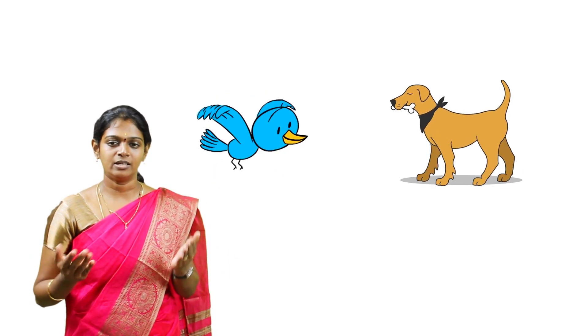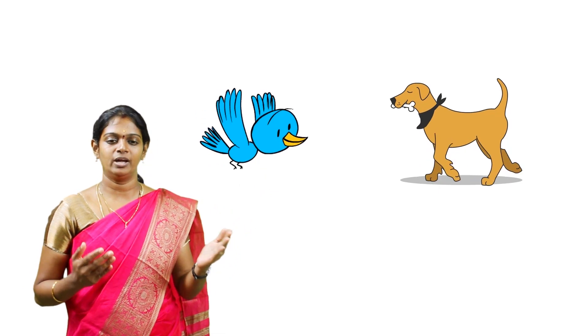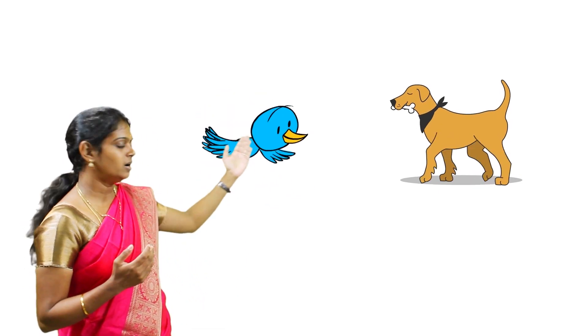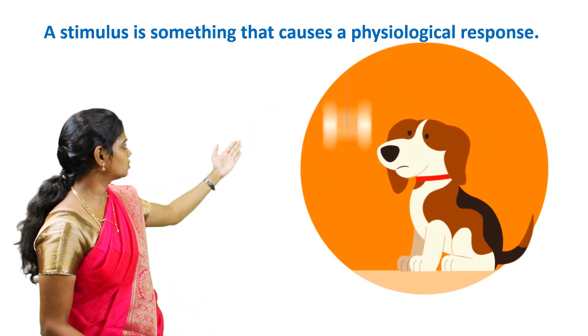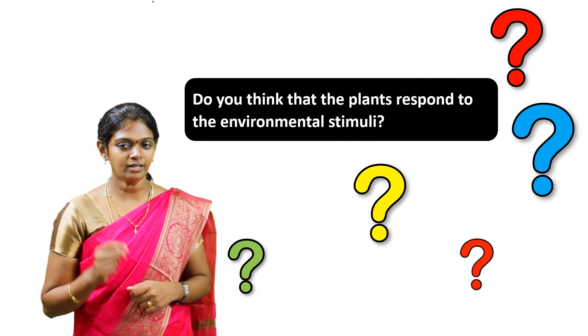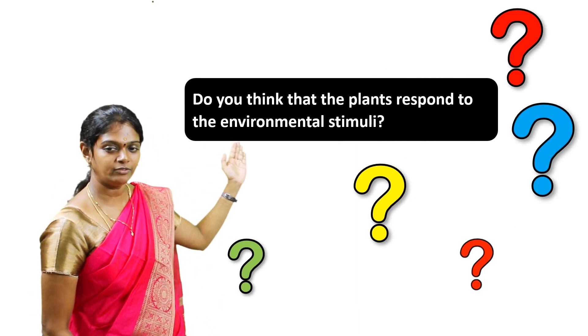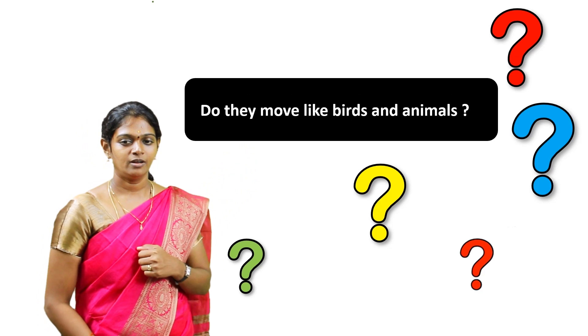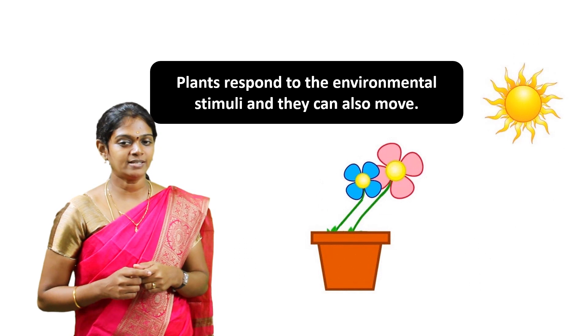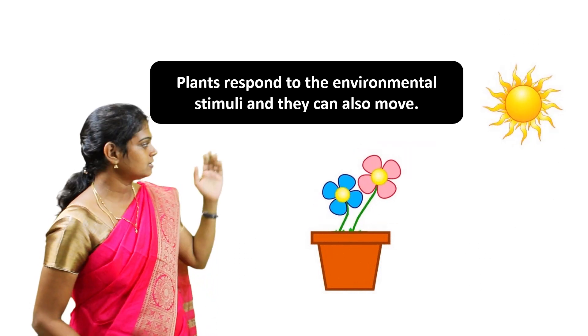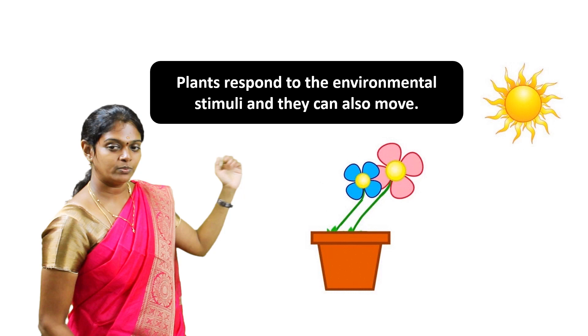Environmental stimuli like weather, shelter, and food make birds and animals move around. The stimulus is something that causes a physiological response. Now, do you think that plants also respond to environmental stimuli? Do they move like birds and animals? Yes, plants also respond to environmental stimuli and they can also move.